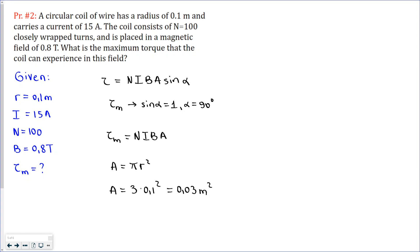We just can substitute them into the equation. Number of turns is 100 multiplied by current, which is 15, multiplied by field strength, which is 0.8, and finally multiply by the area. What we get here: 100 multiplied by 15 multiplied by 0.8 multiplied by 0.03, we get 36 newton meters. That's it.